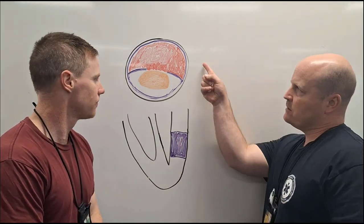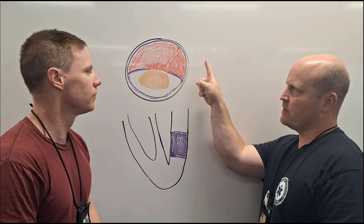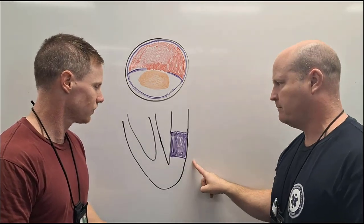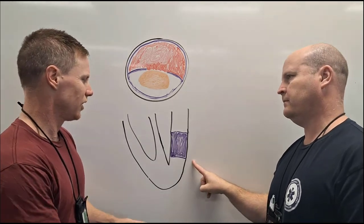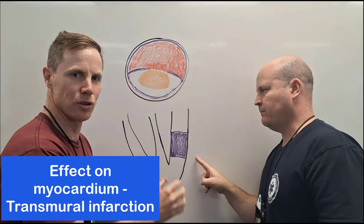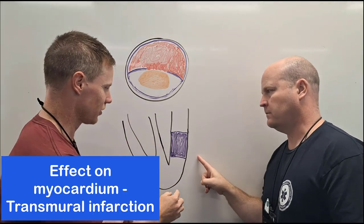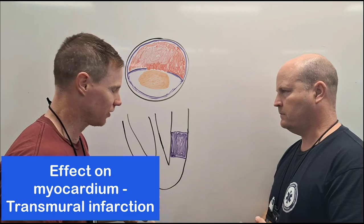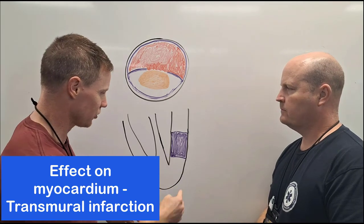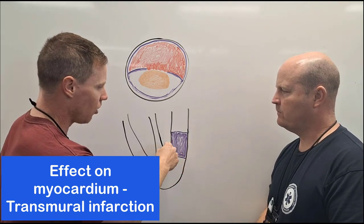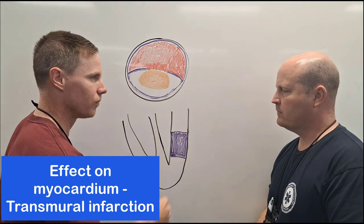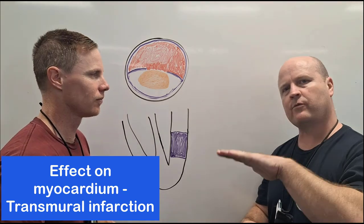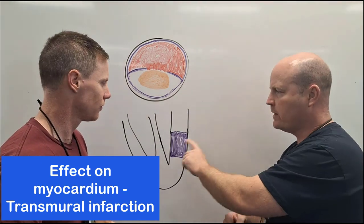So what's this full occlusion of our coronary artery going to do to our myocardium? It's going to cause a transmural infarction. Death — infarction — death of cardiac tissue — it's going to affect the whole wall. Trans means across or through, so all the way through.